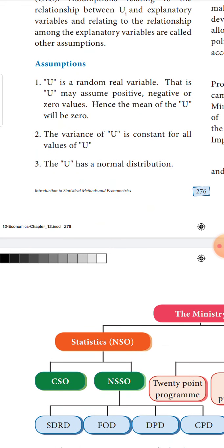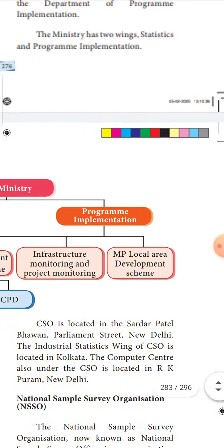u is actually a random real variable — it can be a positive value, negative value, or zero. But the average of the u values will be zero, the variance of u is constant for all values of u, and u has a normal distribution.